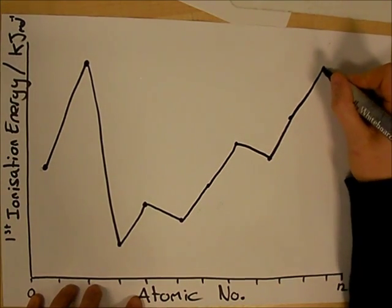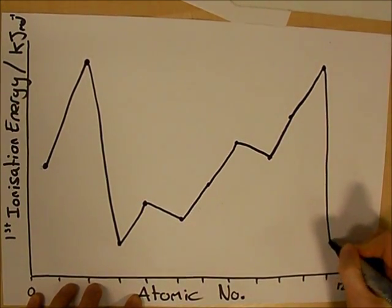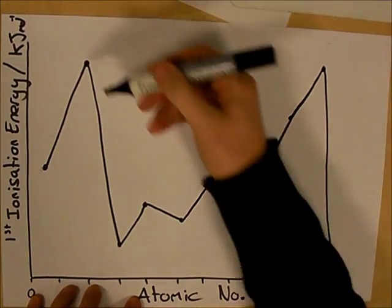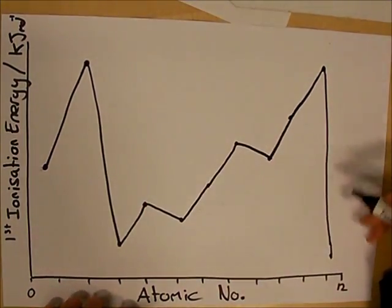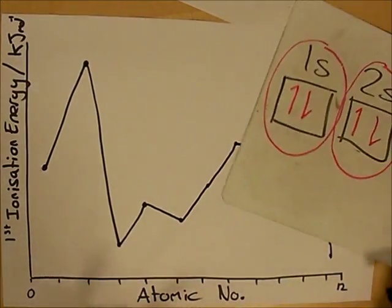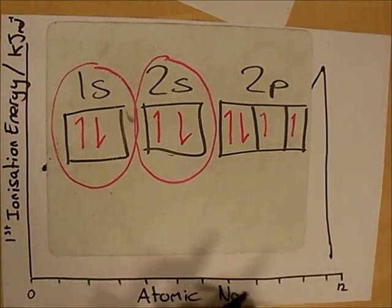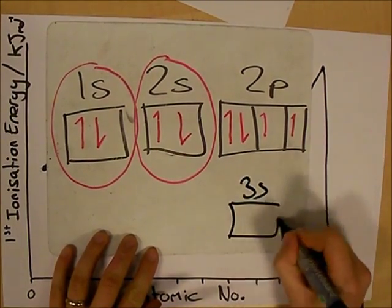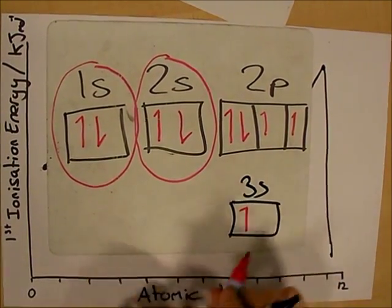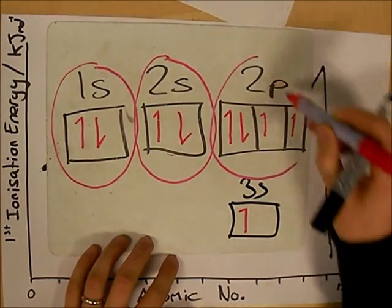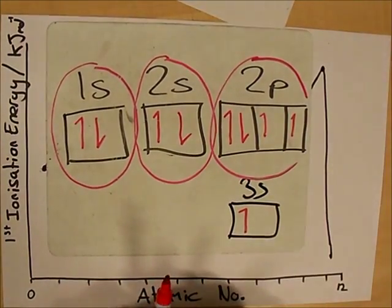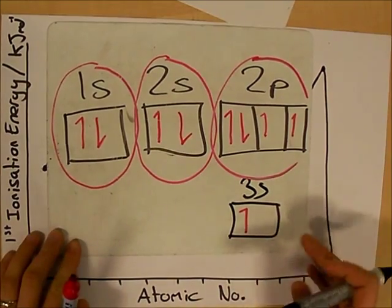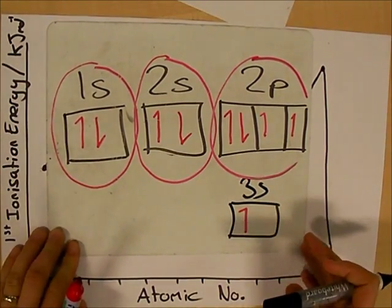When we get back down to group 1 at atomic number 11, we get a much lower first ionisation energy, similar to the drop seen at atomic number 3. This is due to shielding from all of the inner electrons. We've added a 3s electron for the first time, which is shielded by all of the inner electrons and is much further from the nucleus, meaning less energy is required to remove it.